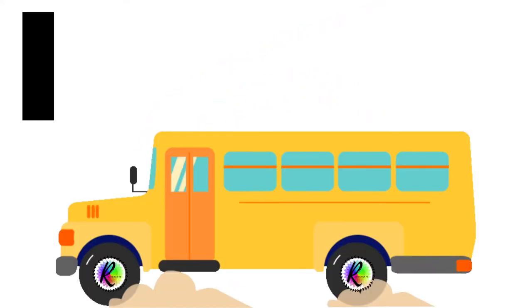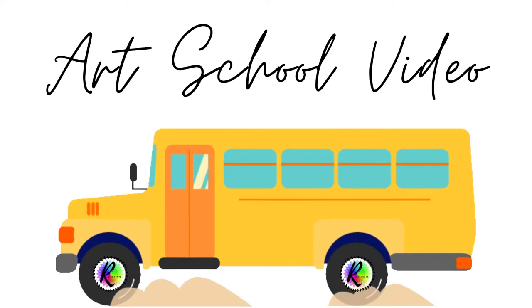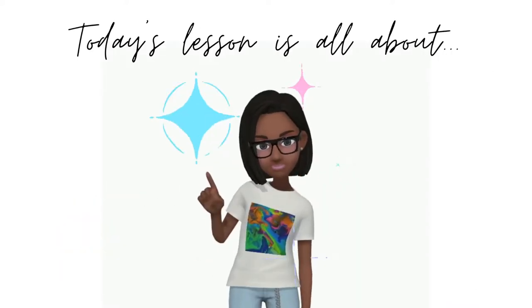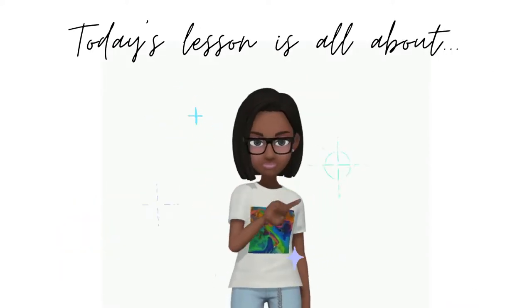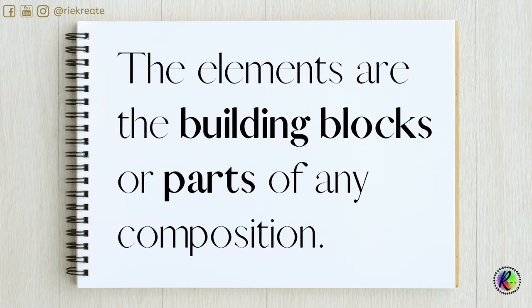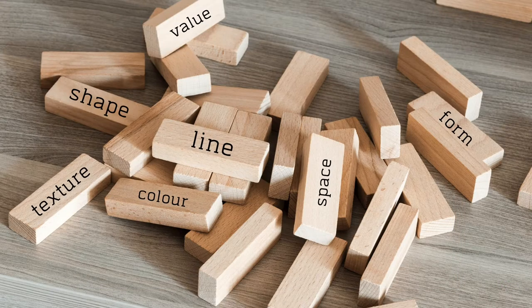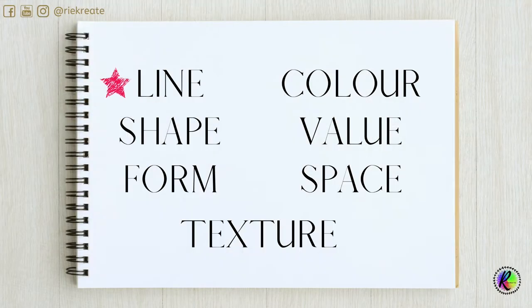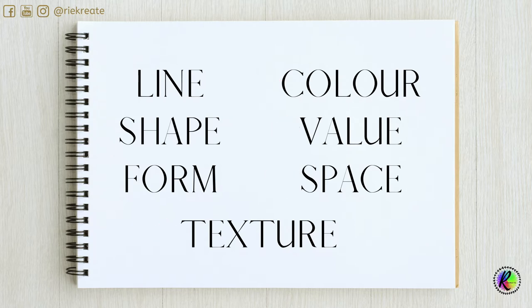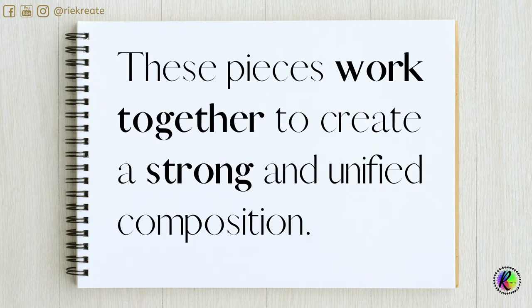Welcome to another art school video. Today's lesson is all about the elements of art. The elements are the building blocks or parts of any composition. They are line, shape, form, color, value, space, and texture. These pieces work together to create a strong and unified composition.